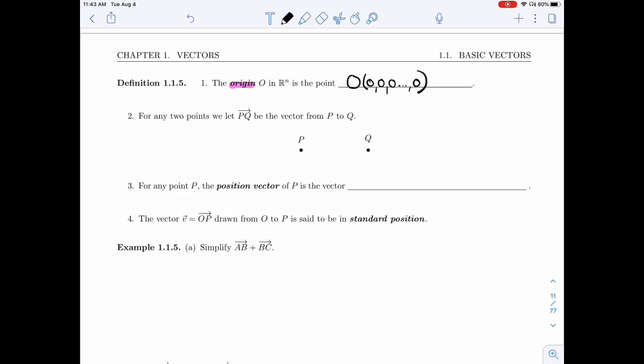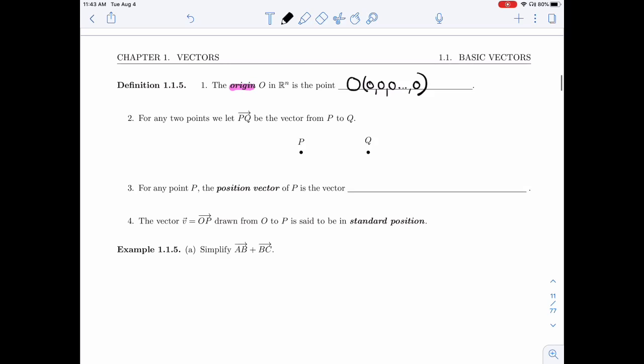Also, if I have any two points, P and Q, in R^n, I can draw a vector starting at P and ending at Q. And that vector will be denoted by PQ with an arrow on top.